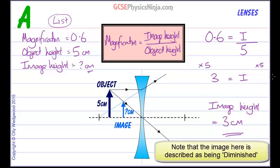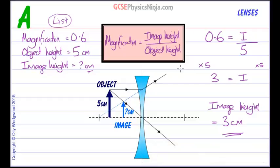And that's how you calculate using the magnification formula for either a concave lens, as we've just seen here, or a convex lens.